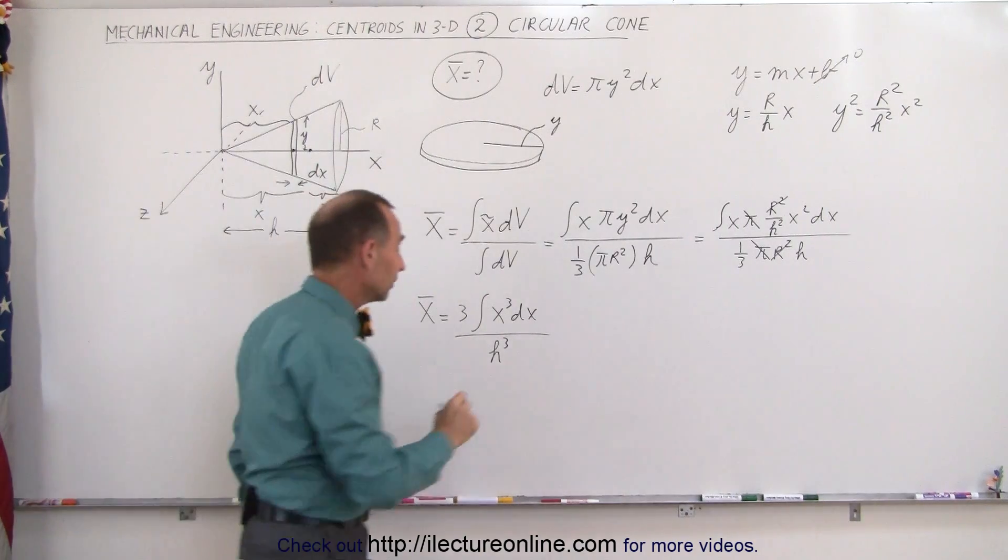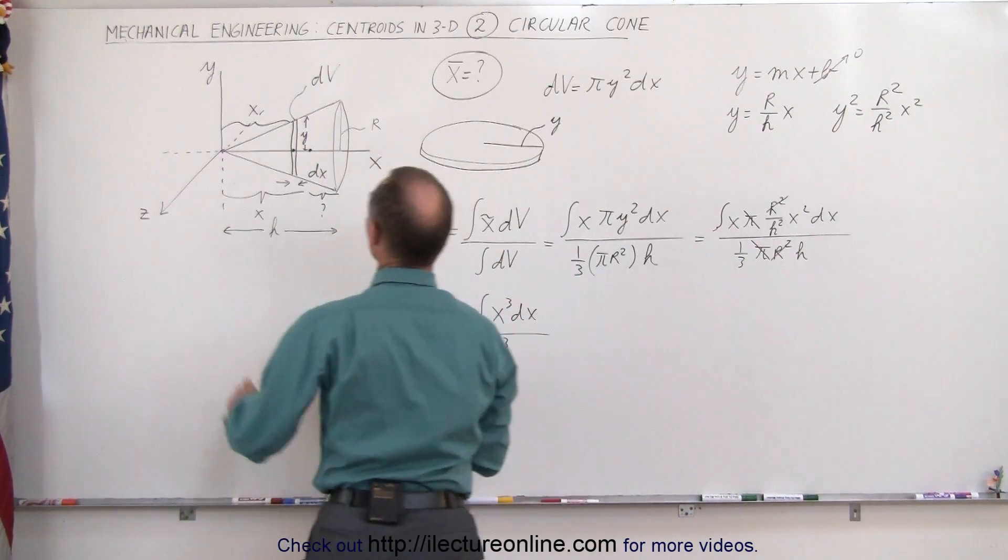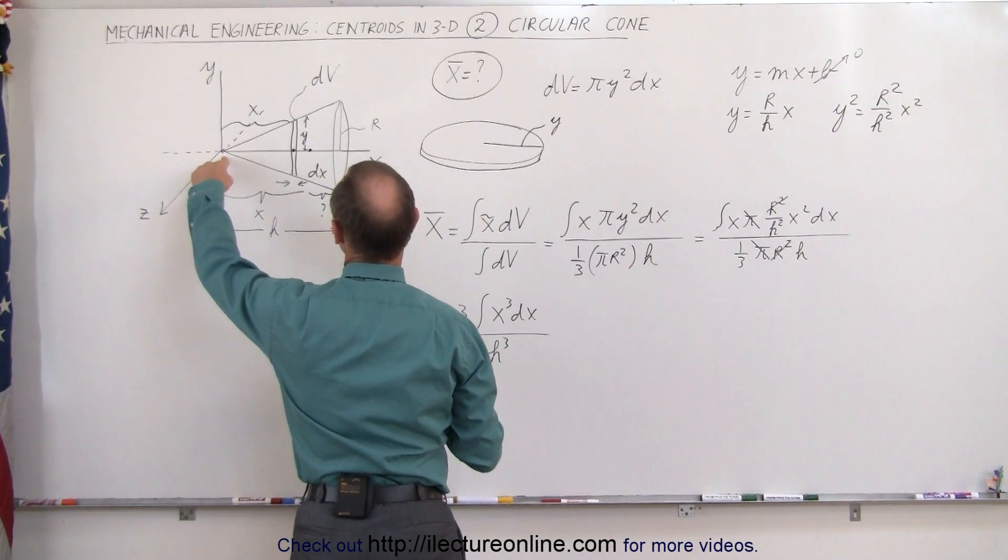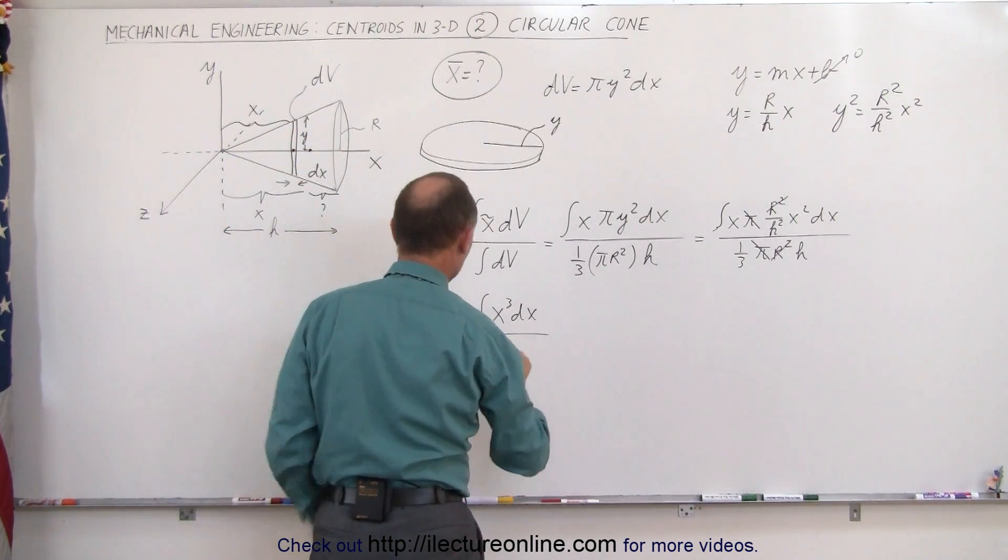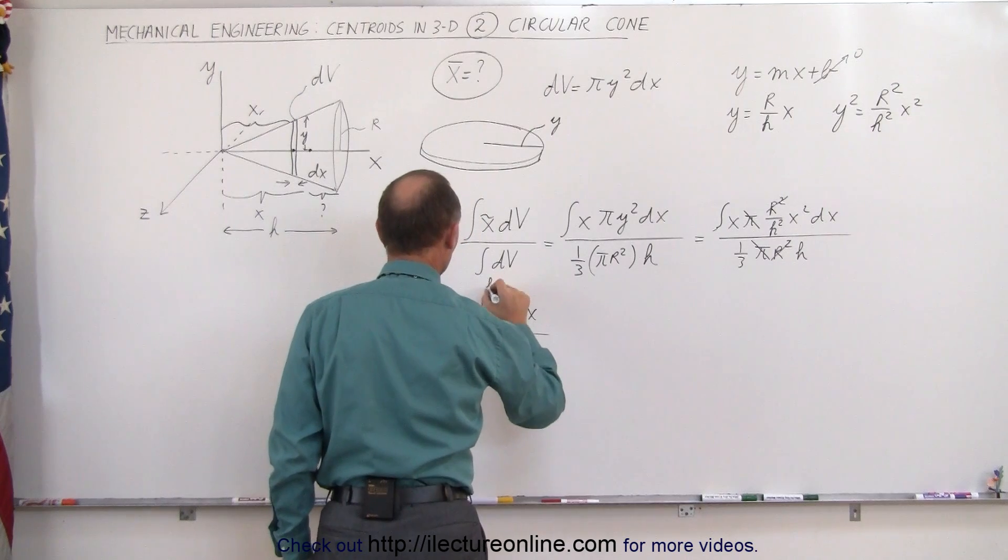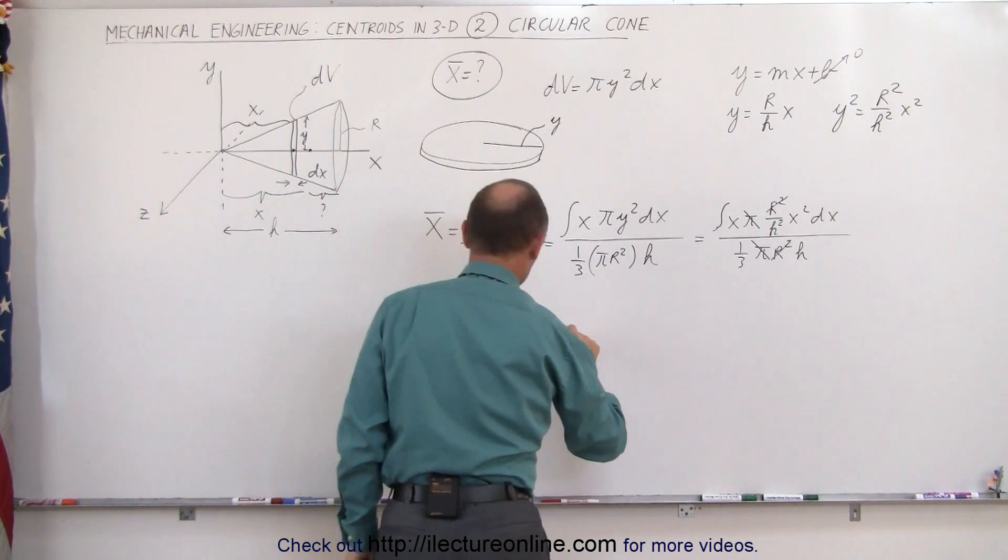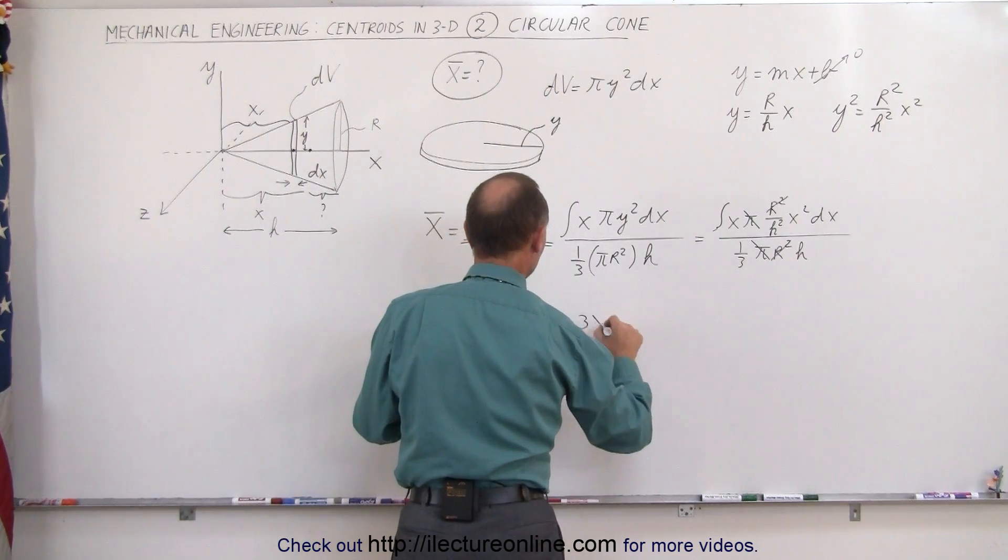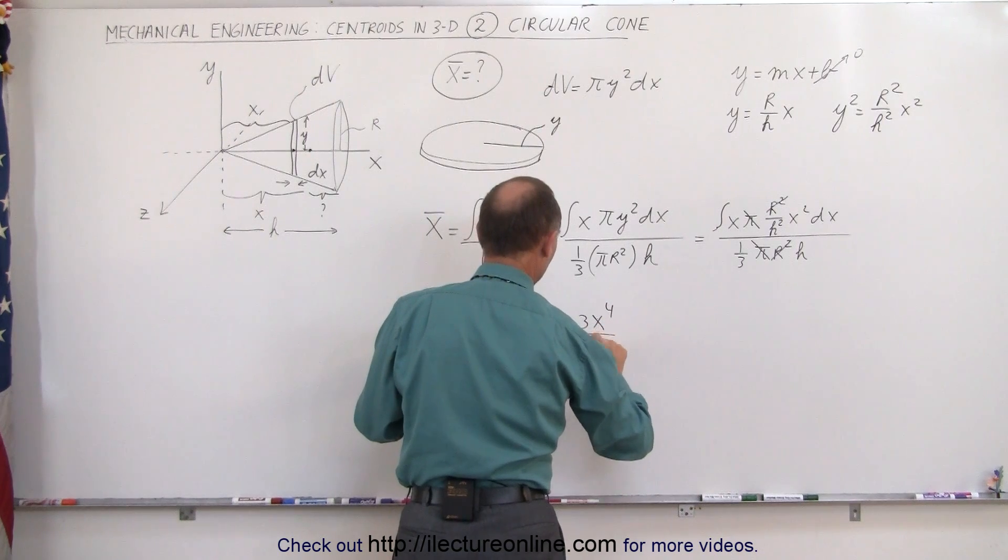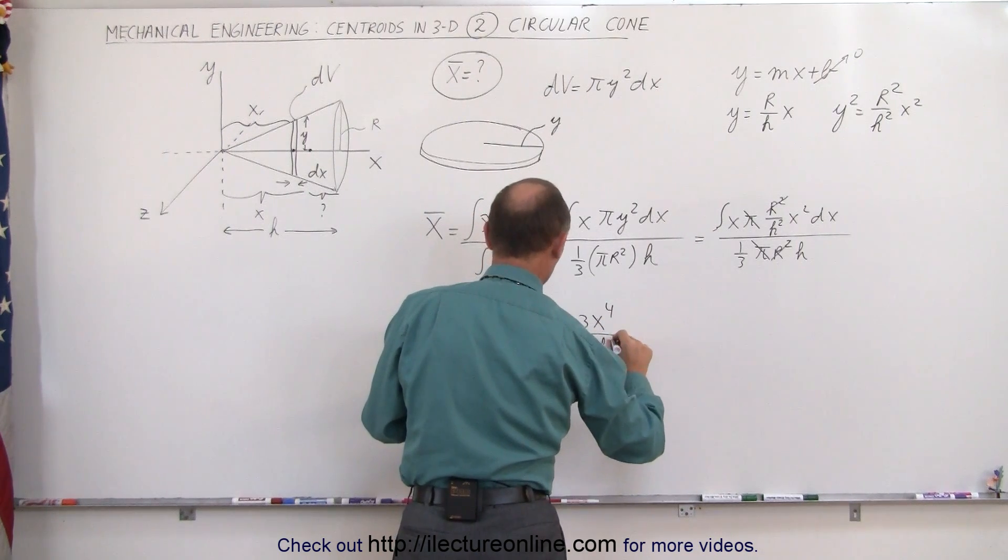Now we can integrate this, and the limits of integration of course goes from x equals 0 to x equals h. h will be the height of the cone, so we integrate from 0 to h, from 0 to h, and this is equal to 3 times x to the 4th over 4 times h³ evaluated from 0 to h.